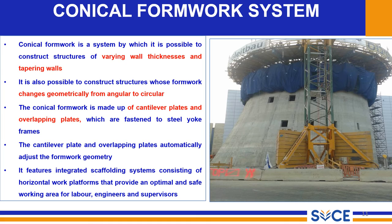The next type is the conical slip form construction. The conical formwork is a system by which it is possible to construct structures of varying thickness and disappearing walls. It is also used when there is a changing geometry from angular to circular. The conical formwork is made up of cantilever plates and overlapping plates which are fastened to steel yoke frames. The cantilever and overlapping plates automatically adjust the form geometry, and consist of conical shapes providing a safe working area for labour, engineers, and the structure.